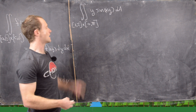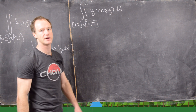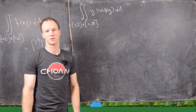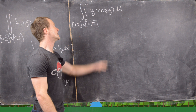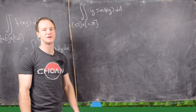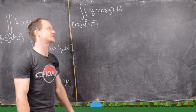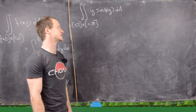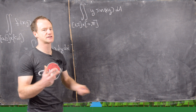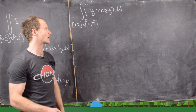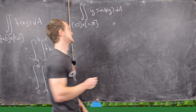For our next example, we take the double integral over the rectangle [1,2] in x and [0,π] in y of y sin(xy). We need to decide whether to integrate with respect to y or x first. If we take the y integral first, we'd need integration by parts because we have a polynomial y times a transcendental function sine. But if we take the x integral first, y is a constant and we really just have to take the antiderivative of sine, possibly with a substitution.